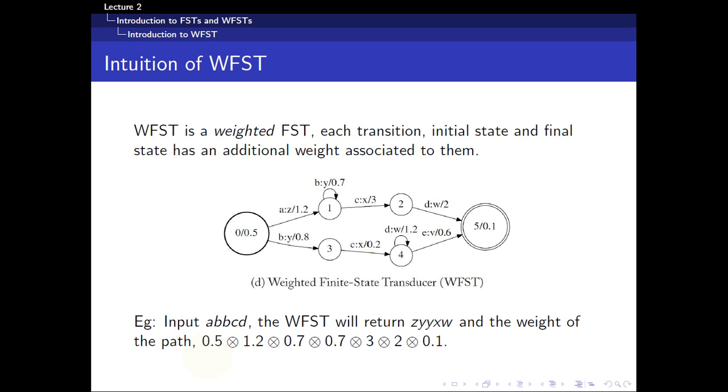So in this case, it's the product of all the weights involved in the path. So 0.5 multiplied by 1.2, 0.7, 0.7, 3, 2, and 0.1. So you can see it's really the weight of this path. Now, what does this symbol mean? It will be introduced a little bit later on after we learn more about semi-rings and so on and so forth.